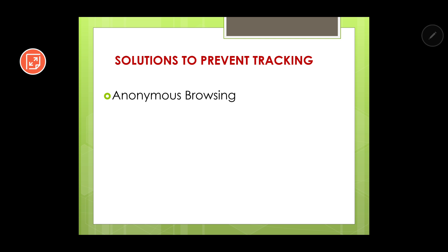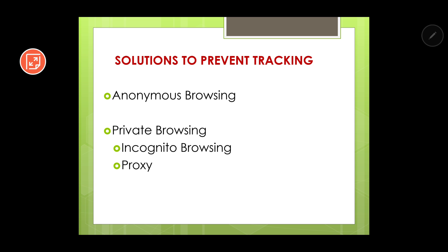So, what are the solutions to prevent tracking? First is anonymous browsing. Second is private browsing. Under private browsing, there are several techniques — we will discuss three of them: the first is incognito browsing, second is proxy, and the third is VPN or virtual private network.